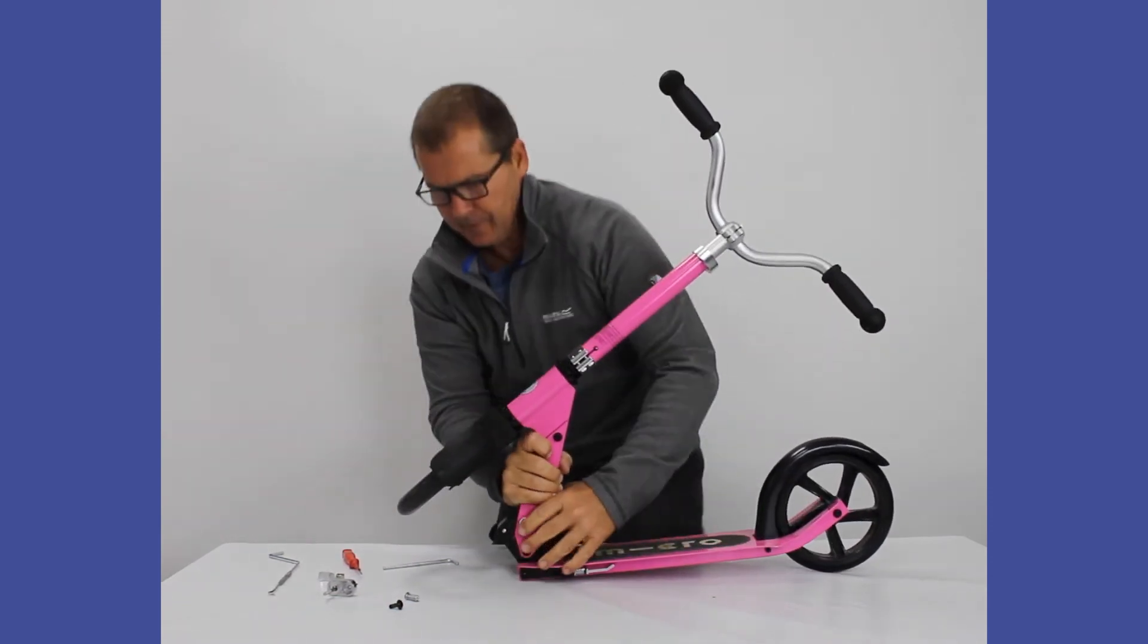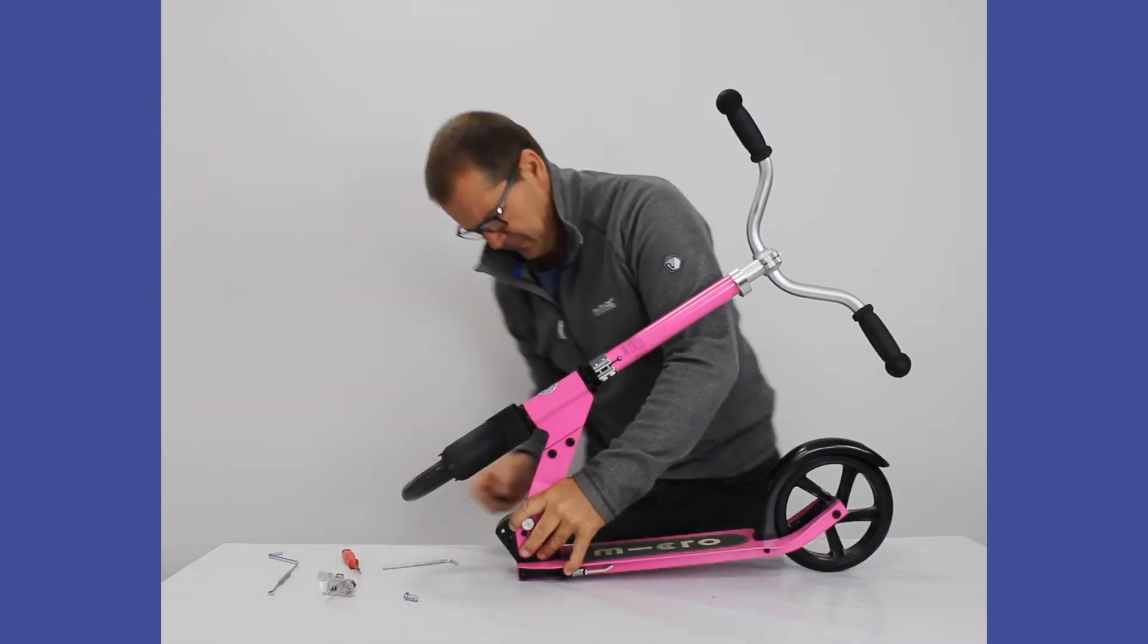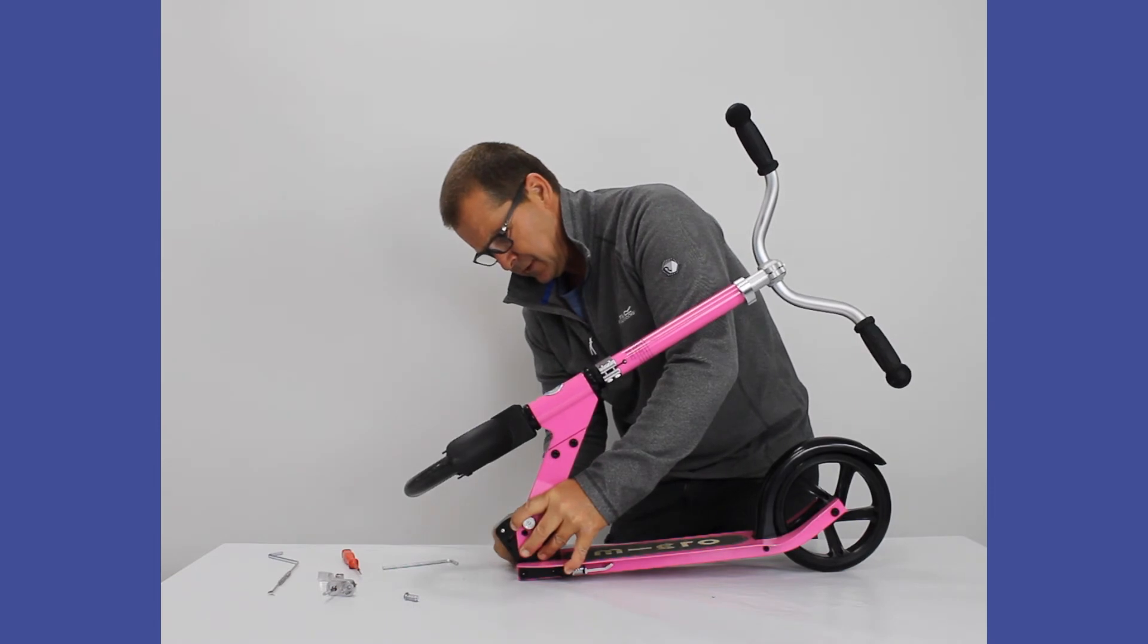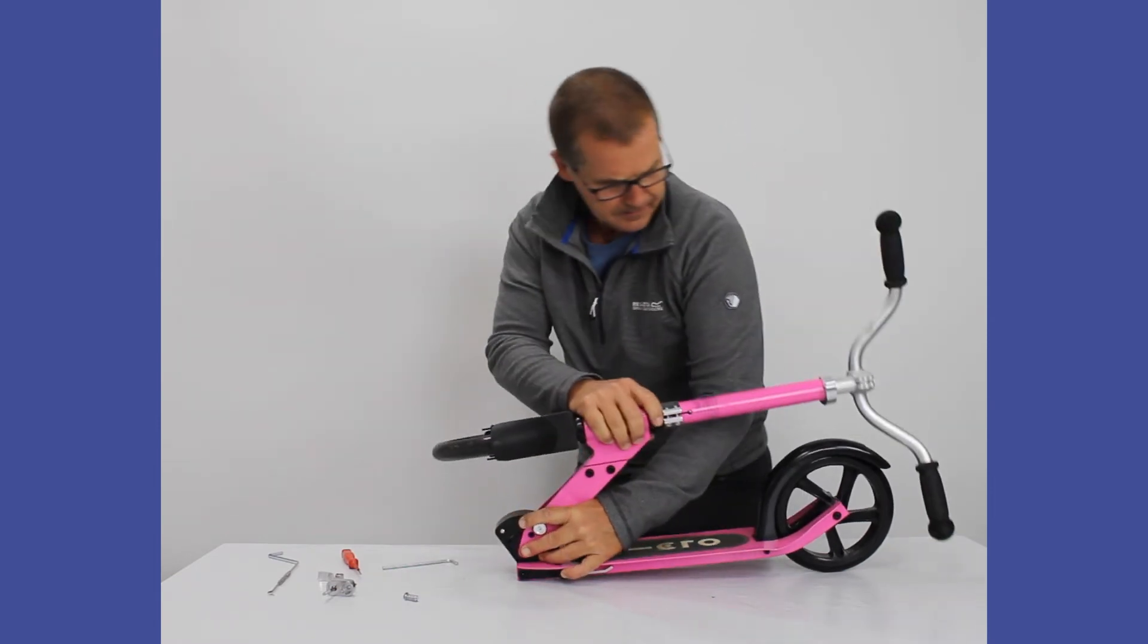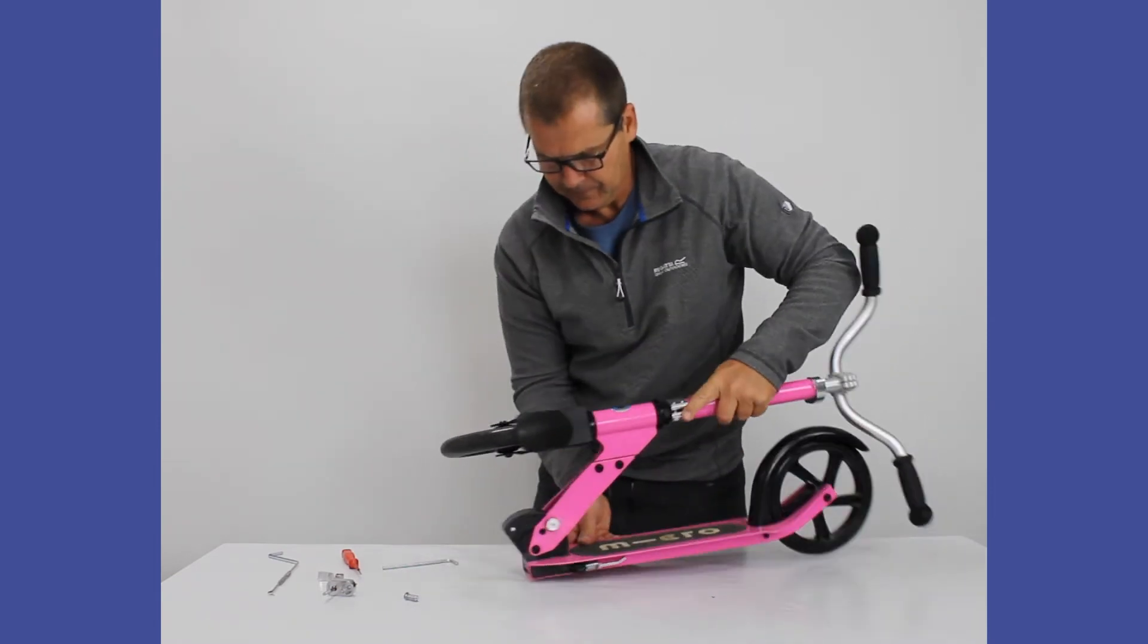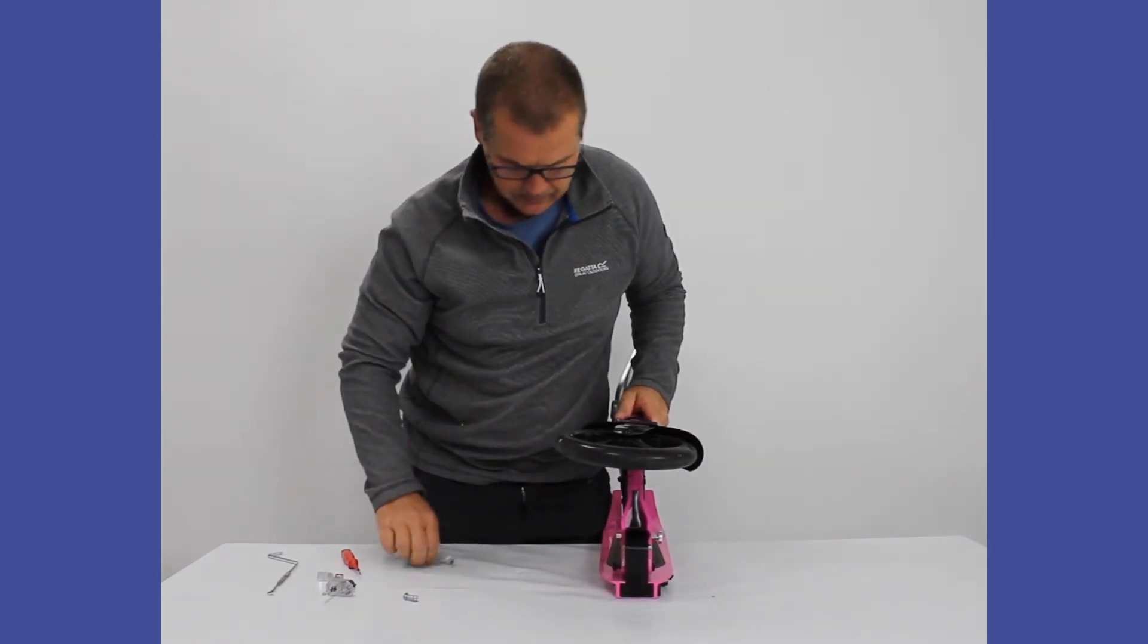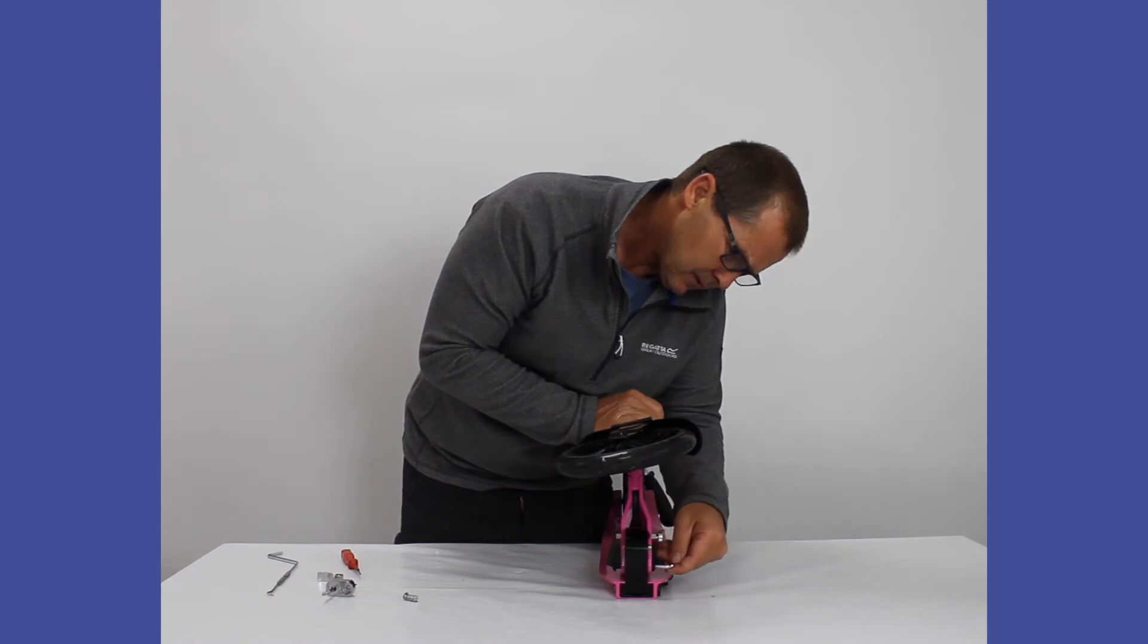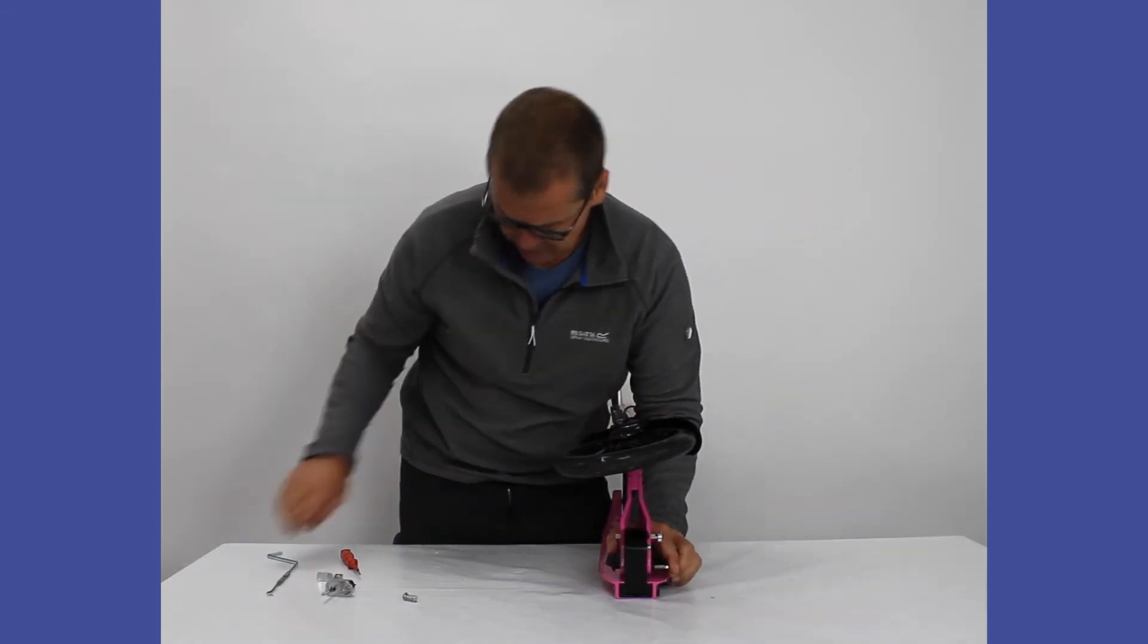Just take a place of lining the hole up. There we go, a bit fiddly. And then the screw goes through the other side. And then we've got the axle in. Tighten that up.